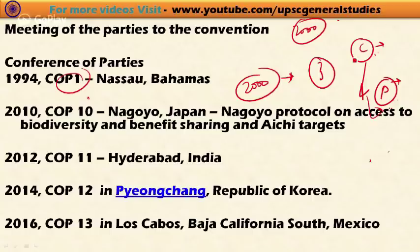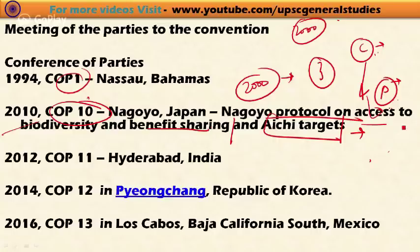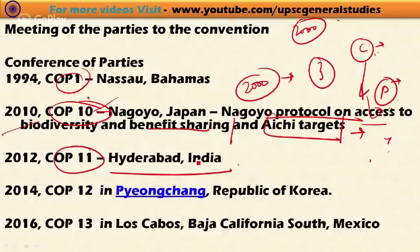At the 10th Conference of Parties in 2010 in Nagoya, the Nagoya Protocol on Access to Genetic Resources and Benefit Sharing was decided, and the Aichi Biodiversity Targets were fixed for reducing threats to biodiversity. COP10 is important from the examination point of view.